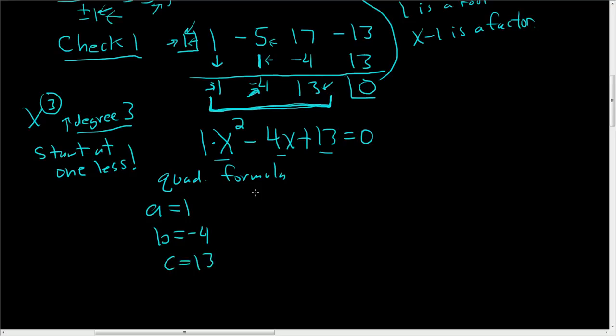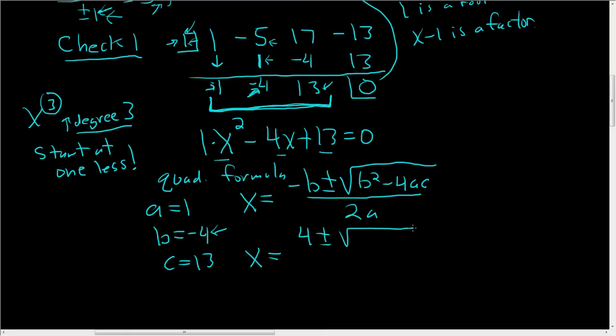So the quadratic formula says that x is equal to negative b plus or minus the square root of b squared minus 4ac, all divided by 2a. So let's plug everything in carefully. So x is negative negative 4, that's just 4, plus or minus square root of 16. b squared will be 16, because it's negative 4, minus 4ac.